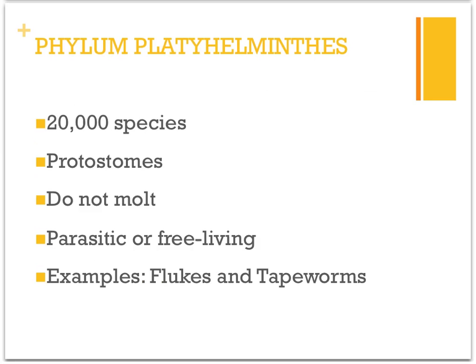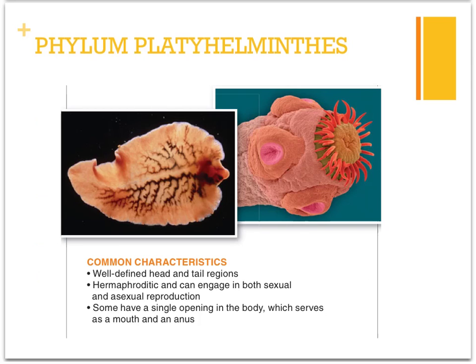Phylum Platyhelminthes has about 20,000 species and they will not molt. These are your flatworms. Some are parasitic, but some are free-living. Examples include flukes and tapeworms. They have a head and tail region, and most are hermaphroditic. Some have only a single opening in their body, so food enters and waste leaves through the same opening.